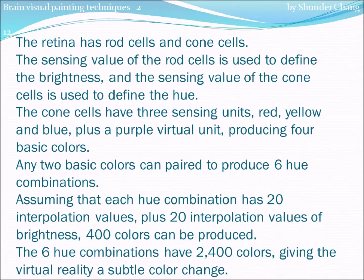The retina has rod cells and cone cells. The sensing value of the rod cells is used to define the brightness, and the sensing value of the cone cells is used to define the hue. The cone cells have three sensing units — red, yellow and blue — plus a purple virtual unit, producing four basic colors. Any two basic colors can be paired to produce six hue combinations. Assuming that each hue combination has 20 interpolation values, plus 20 interpolation values of brightness, 400 colors can be produced. The six hue combinations have 2,400 colors, giving the virtual reality a subtle color change.